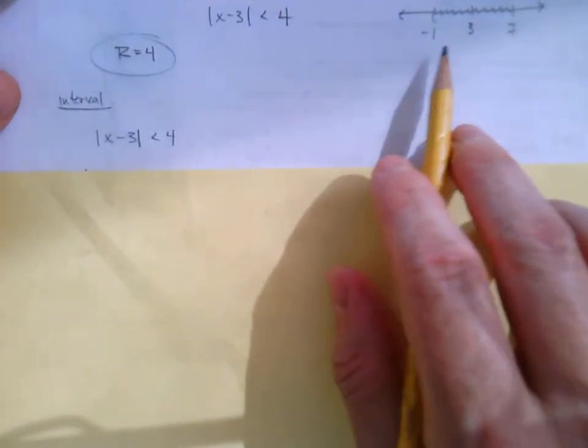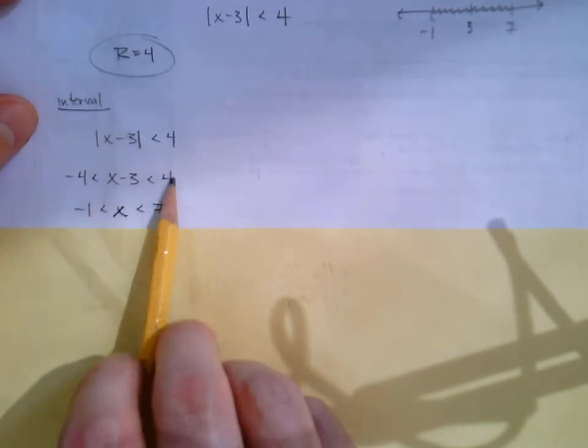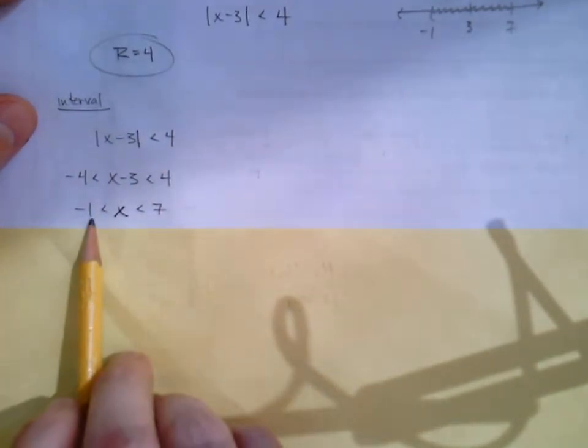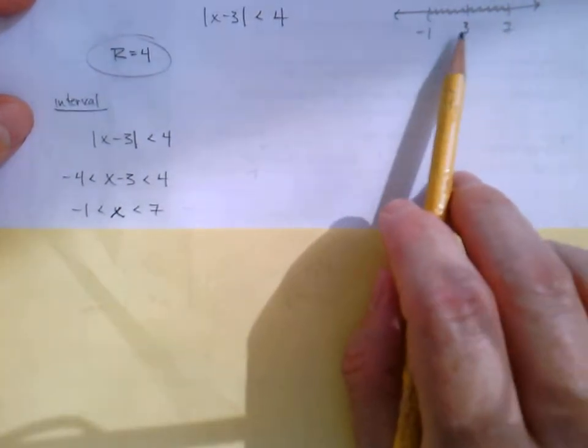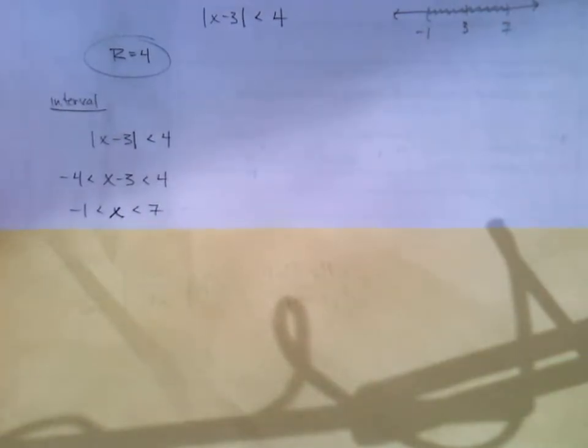But what about those endpoints at negative 1 and 7? So I also showed the negative 1 and the 7 algebraically. So if we set this up, then we know x minus 3 is between negative 4 and 4. And so if we add 3, negative 1 less than x less than 7. We can tell that we're moving 4 in each direction off of where we're centered. But what about those endpoints?